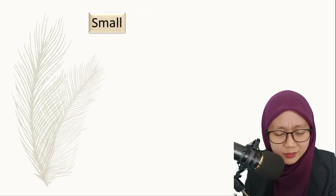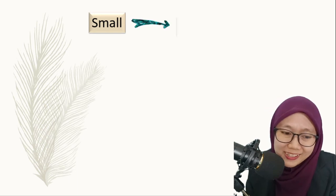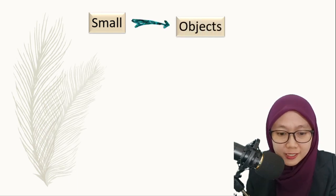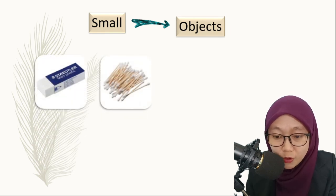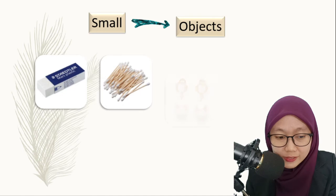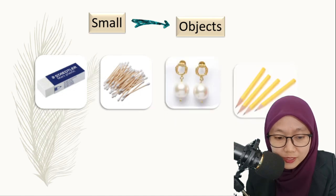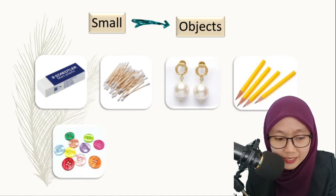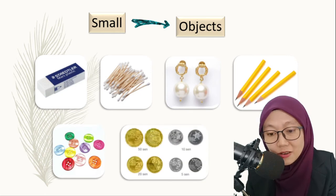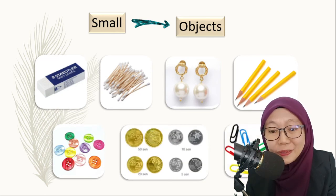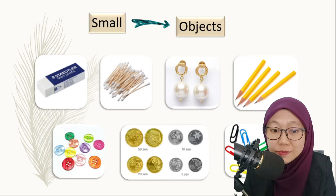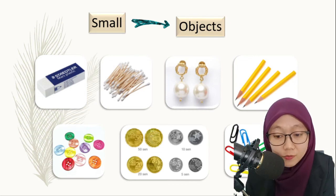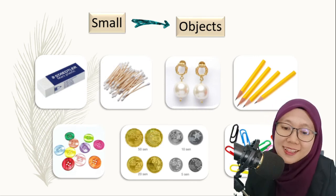Now let's move to small objects. Objects are non-living things. We have a lot of small objects, for example, like an eraser, cotton bud, earrings, pencil, button, coins, and paperclip. So all of these are small objects, and objects are non-living things.